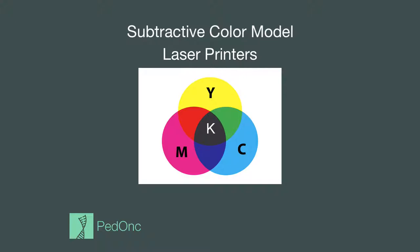If the printer mixes equal parts cyan and yellow it generates green; equal parts magenta and yellow generates red; and equal parts cyan, magenta, and yellow generates black. However, because black is so commonly used — for example in printing text — and because it is expensive and complicated to mix those three toners, laser printers typically have a separate black cartridge referred to as K.